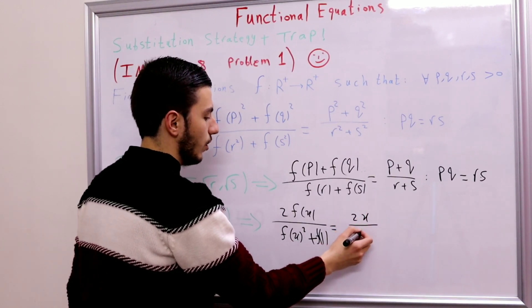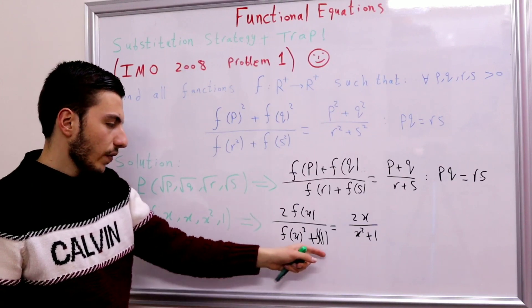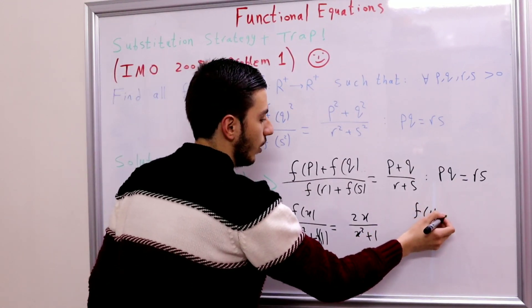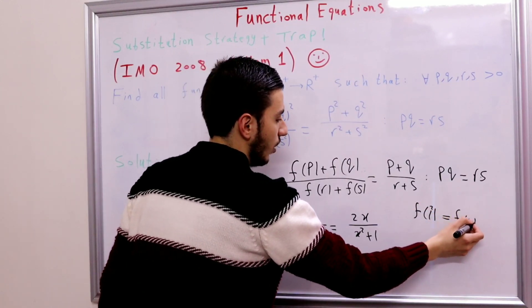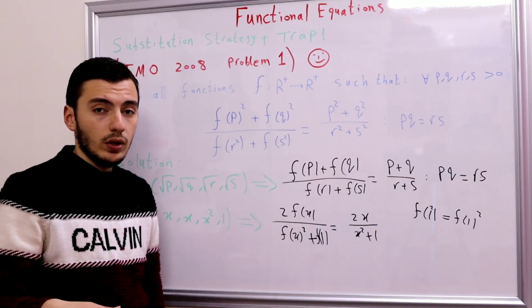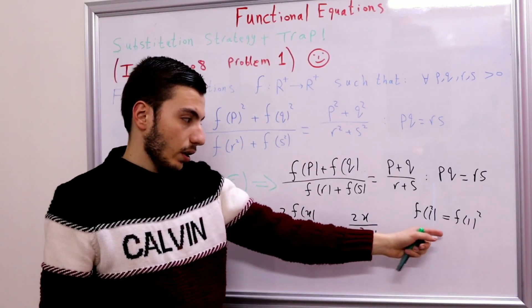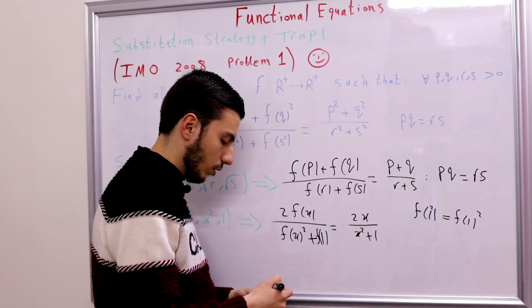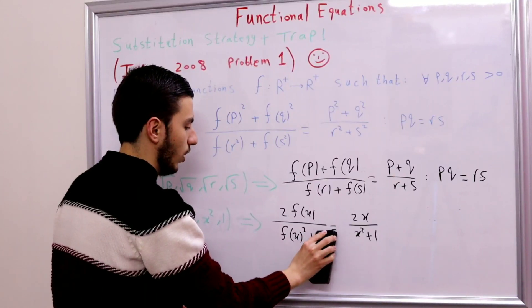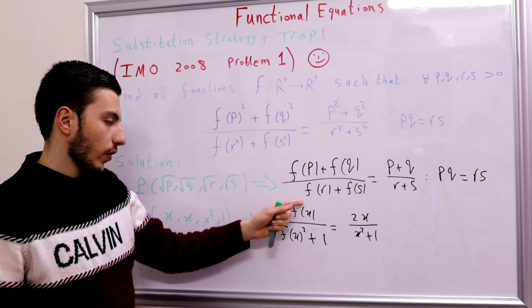What is f(1)? From the relation f(x²) = f(x)², setting x = 1 gives f(1)² = f(1), so f(1) = 0 or f(1) = 1. Since f maps ℝ⁺ to ℝ⁺, f(1) = 0 is not accepted. Therefore f(1) = 1, and our relation becomes 2f(x) / (f(x)² + 1) = 2x / (x² + 1).